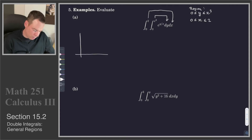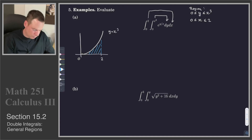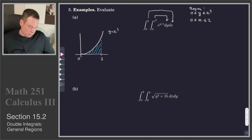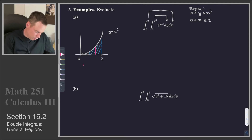y goes from 0 up to x cubed, so we draw the curve y equals x cubed. x goes from 0 to 2. Our region is vertically simple — no matter where we draw a vertical line, the lower curve is the constant y equals 0 and the upper curve is y equals x cubed.